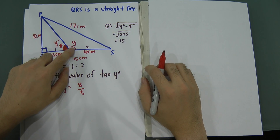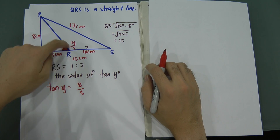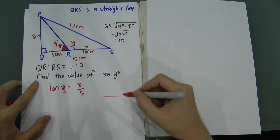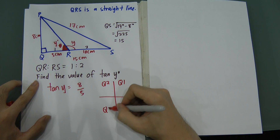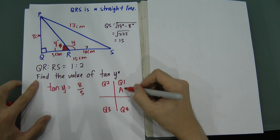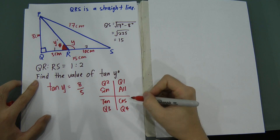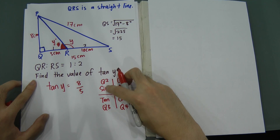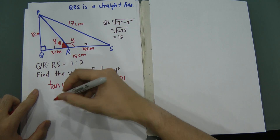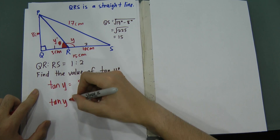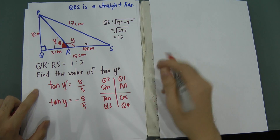The real angle y is bigger than 90 degrees, meaning it falls in the second quadrant. Drawing the four quadrants: all ratios are positive in the first, sine is positive in the second, tangent is positive in the third, and cosine is positive in the fourth. Therefore, in the second quadrant, only sine is positive and tangent is negative. So tangent y equals negative 8 over 5.